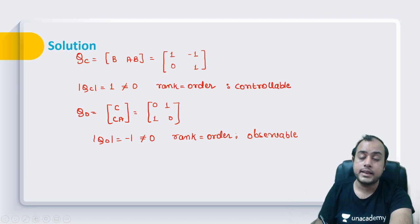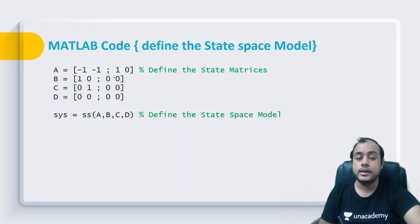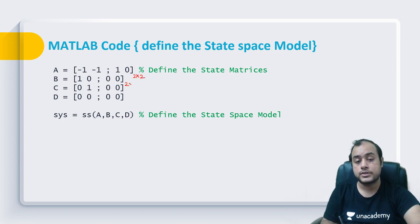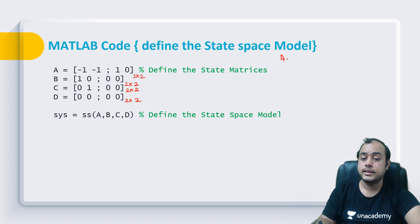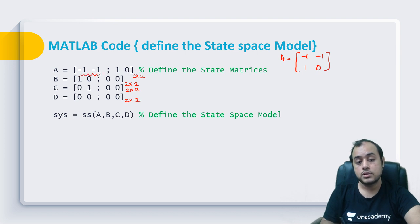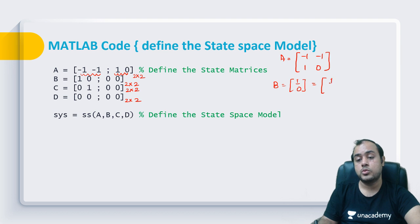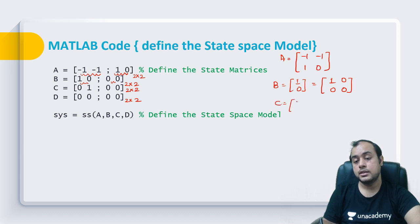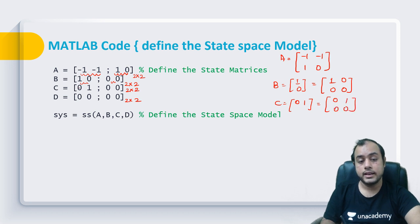Now let's see how this is done in MATLAB. We have to input the state model. All matrices must have the same order, that is 2×2. For matrix A: first row [0, 1], second row [-1, -1]. For matrix B, since it was [1; 0], we make it 2×2 by adding zeros: first row [1, 0], second row [0, 0].